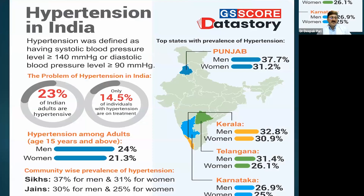From India, 23% of the population is hypertensive, and only 14.5% of individuals with hypertension are on treatment. Approximately 24% of adults above age 15 are hypertensive in males and 21% in females. Among religious communities, Sikhs show higher hypertension prevalence compared to Jains and Christians, all three having higher prevalence than the general Indian population. In Punjab, 37% of men and 31% of women are hypertensive. Similar figures are seen in Kerala — 32% of men and 30% of women — followed by Telangana and Karnataka.